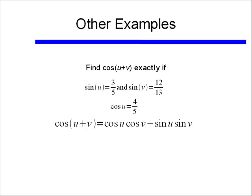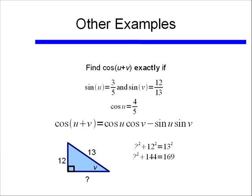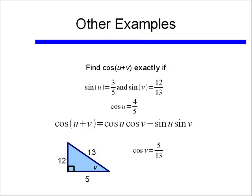Now I need to find cosine of v. This time, instead of using the Pythagorean identity, I'm going to use a skill from the very beginning of the class — drawing triangles. If I have this angle v, and I know that sine of v is 12 over 13, that means my opposite side is 12, and my hypotenuse is 13. I can use the Pythagorean theorem to find my missing side: something squared plus 12 squared equals 13 squared. Subtracting 144 from both sides, the missing side squared is 25, so that missing side is length 5. Since the adjacent side is 5 and the hypotenuse is 13, the cosine of v is simply 5 over 13.